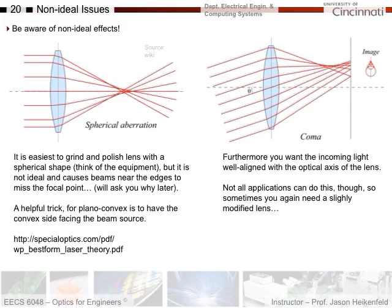One thing you can do — say in the lab you have a plano-convex lens and you want to get the best performance out of it, the minimum amount of spherical aberration — the best practice is to have the convex side facing the beam source. So if I had a laser beam coming in and I had a plano-convex lens, I would have the convex side facing the laser, and then it would focus down better than if you reversed it.